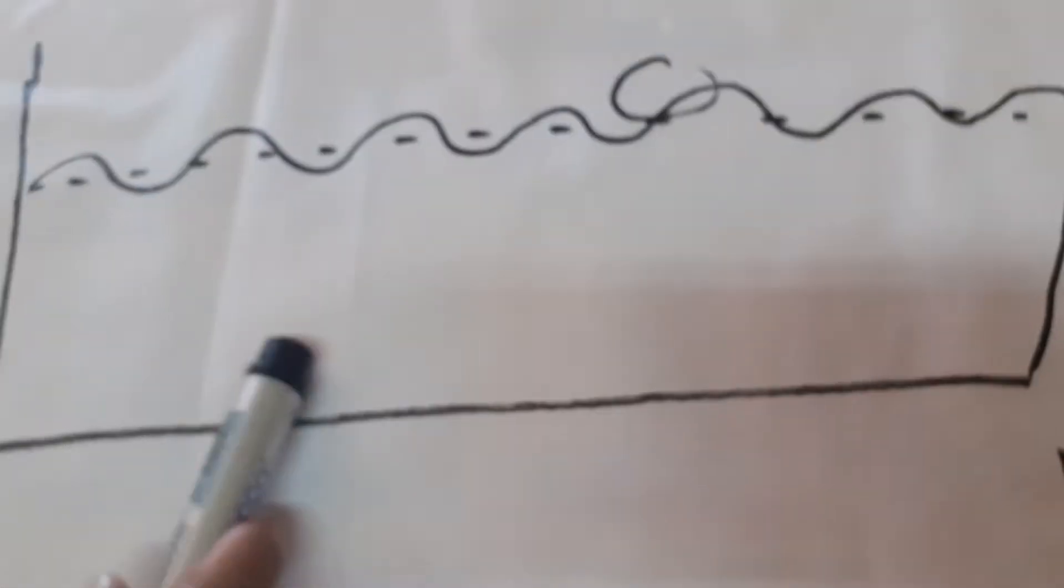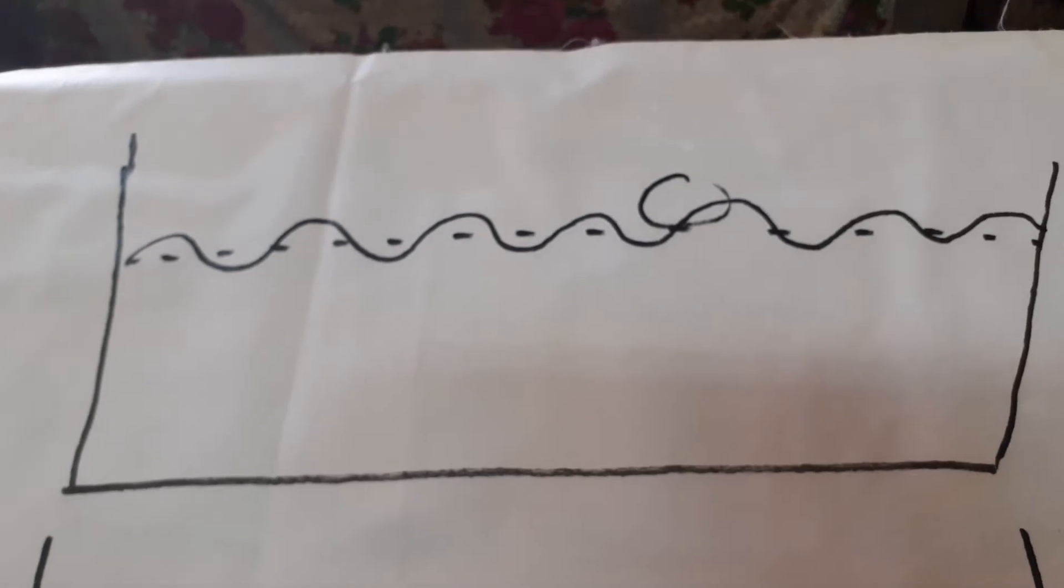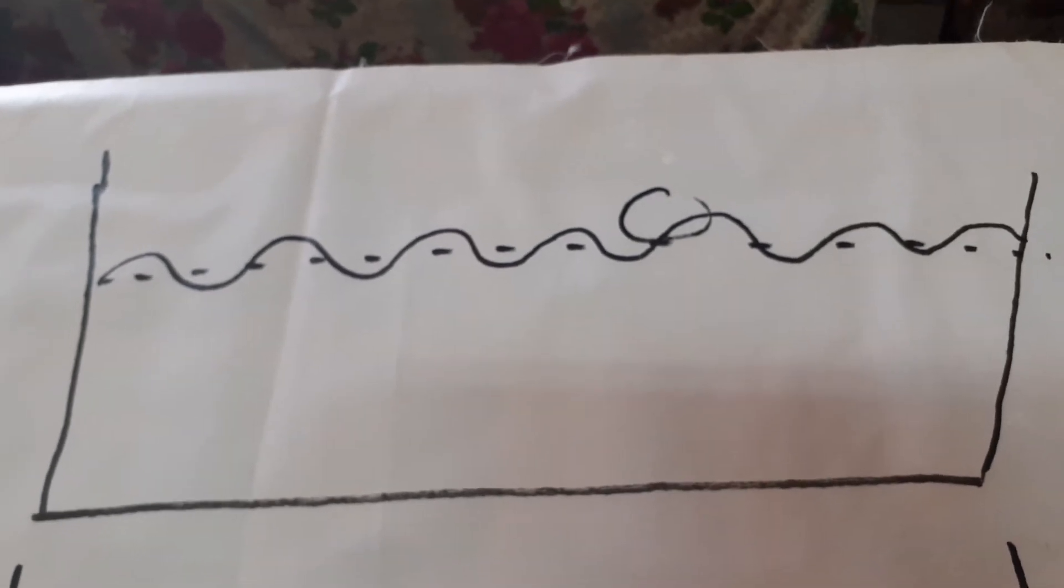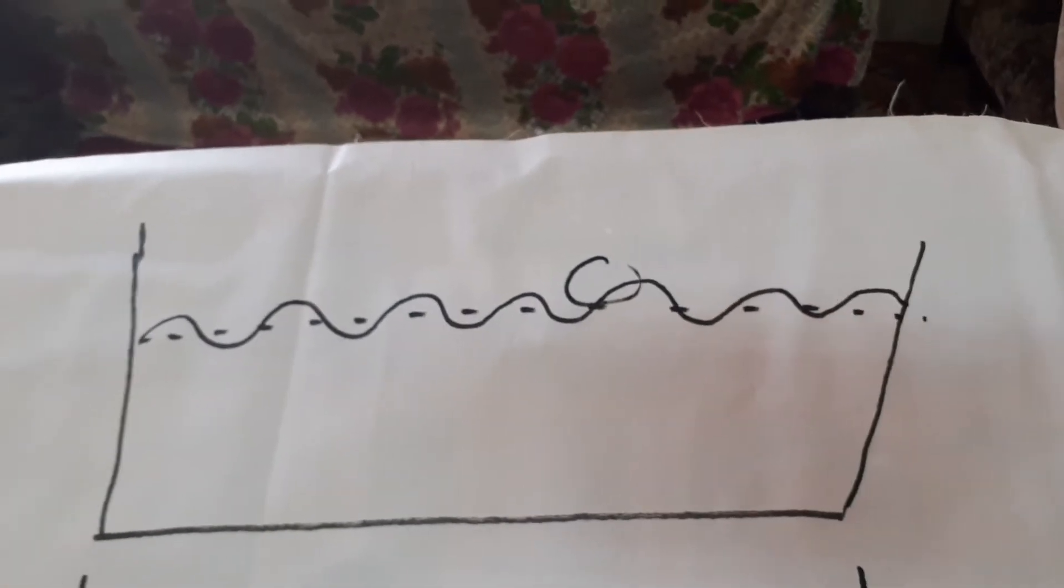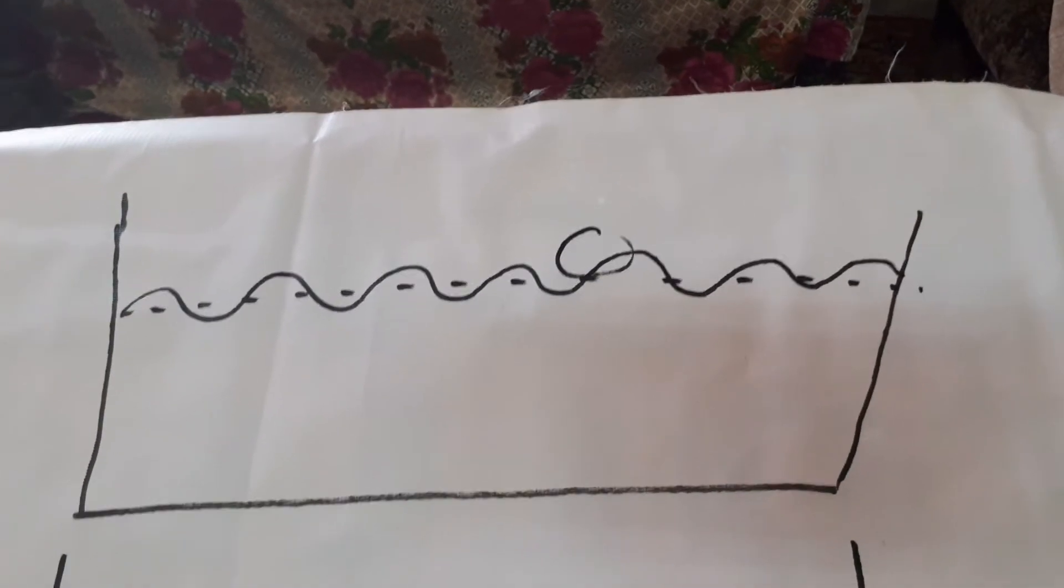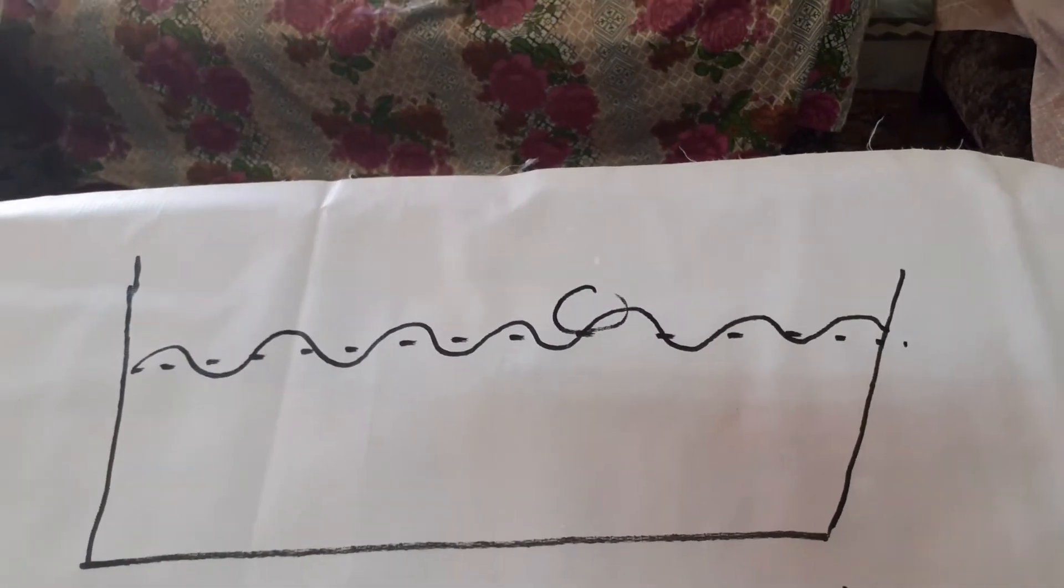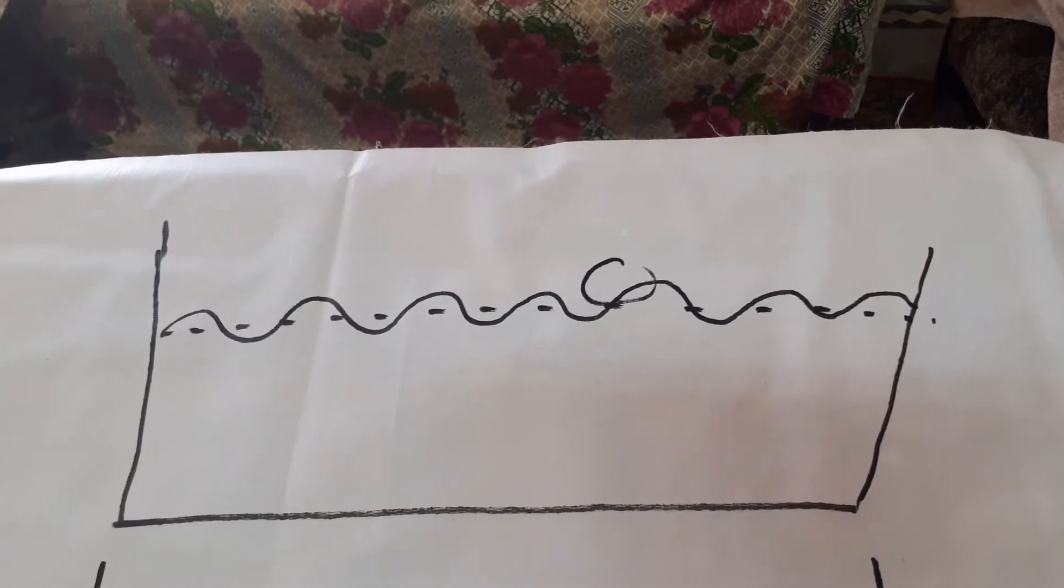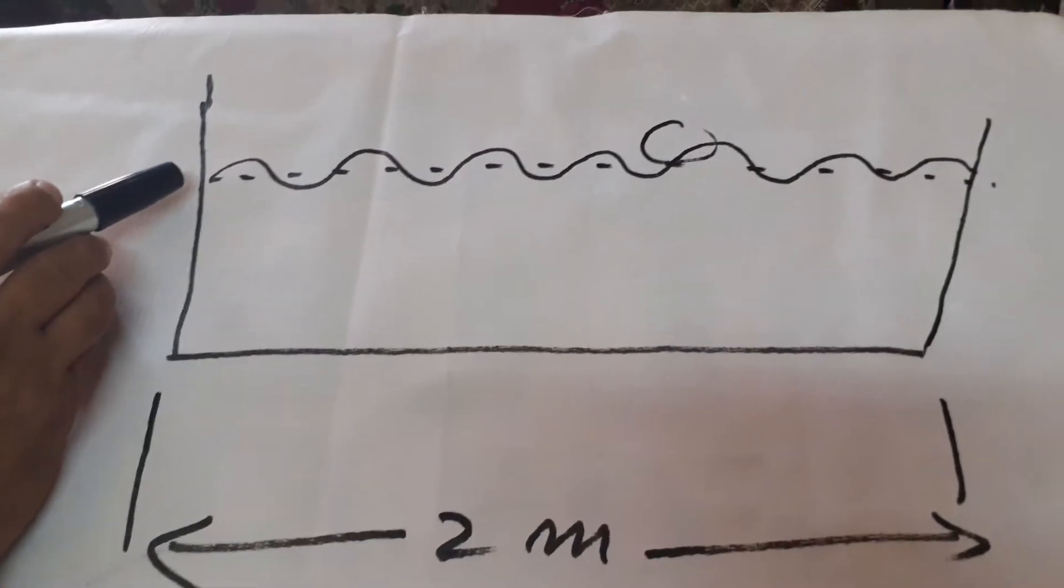Let's draw a figure to understand the example. Here is a water tank filled with water, and the length of the water tank is 2 meters. He produces water waves on the water surface.